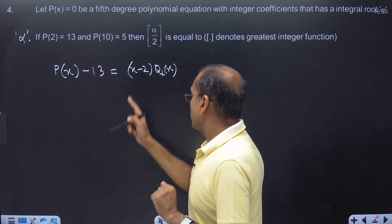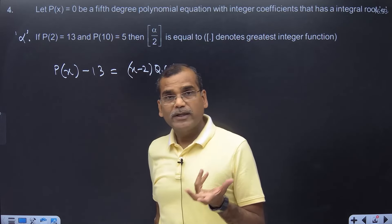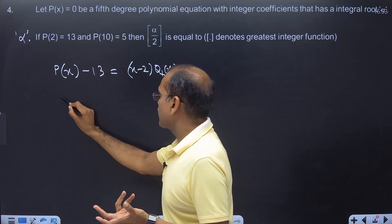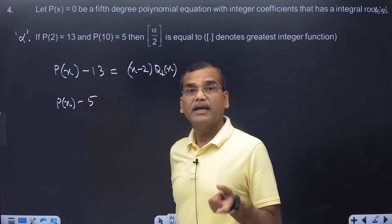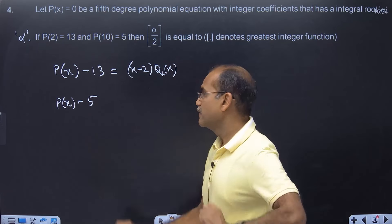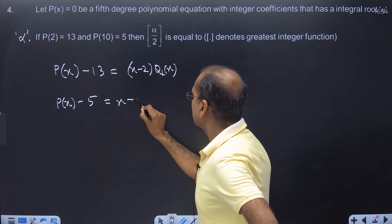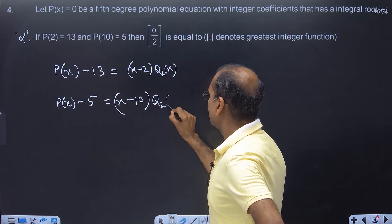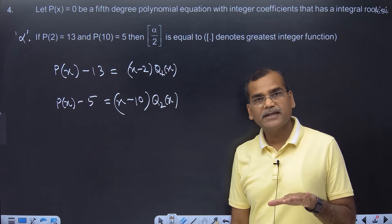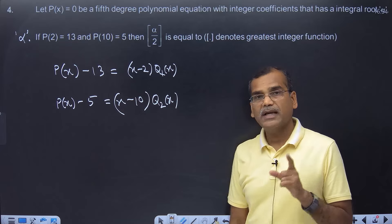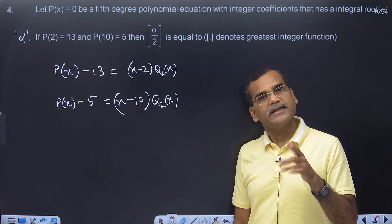Fine, now similarly, you understand my logic. For P(10) equals 5, I think in terms of equal to 0. So you will definitely say P(x) minus 5 has root 10, so x minus 10 is the factor, equals Q2(x) which is also a polynomial. Now you again understand that Q1, Q2, both have all coefficients as integers.